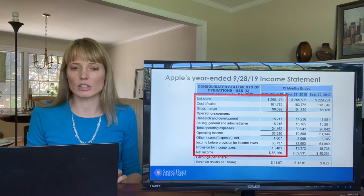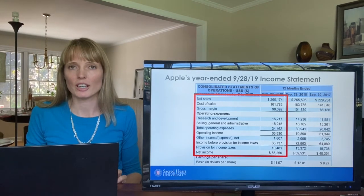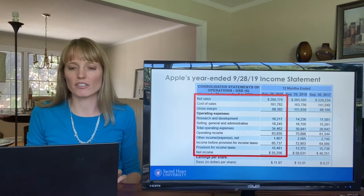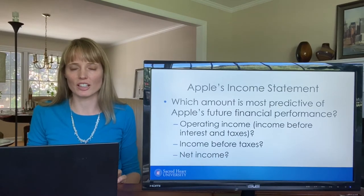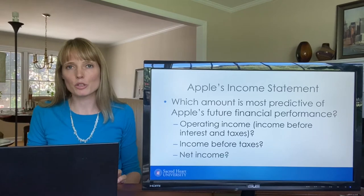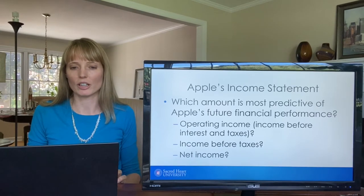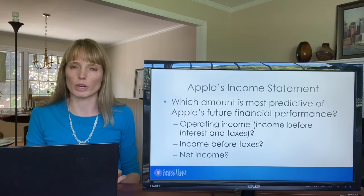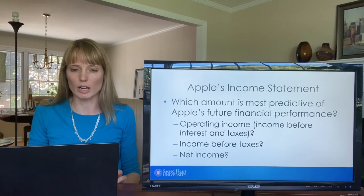Take a look at Apple's recent year-ended income statement for 2019. We see several subtotals on this income statement — it doesn't just show total revenues less total expenses. We see gross profit (here called gross margin), operating income, income before taxes, and finally net income. At the very bottom we see earnings per share. There's no clear answer as to which subtotal is most important in predicting future earnings, so the income statement reports all of these pieces so investors can place various weights on each measure.